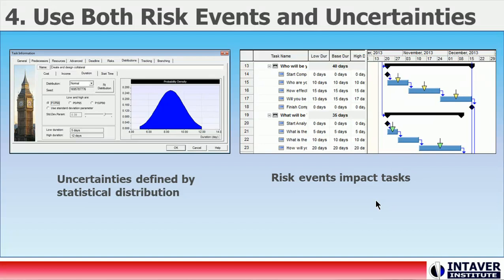While this adds more complexity to the model, there are some tools and processes to minimize your effort without sacrificing accuracy. Uncertainty bands allow you to distinguish levels of uncertainty that automatically calculate estimate ranges based on historical data. Risk events can be efficiently assigned to activities using drag and draw, eliminating much of the detailed work previously required when assigning risk events to schedules.